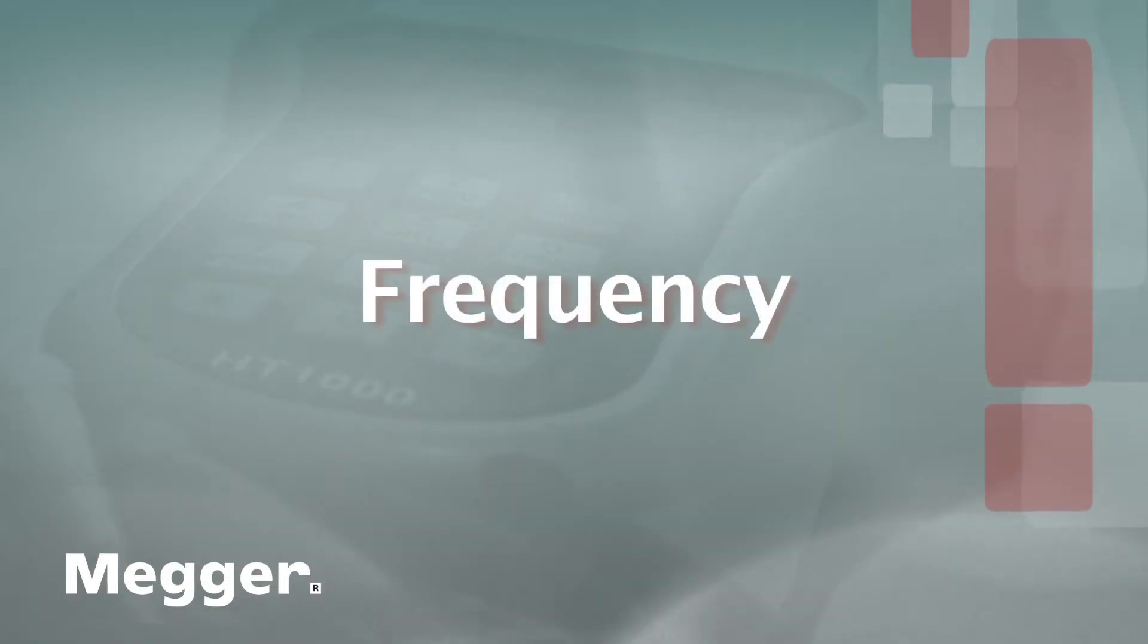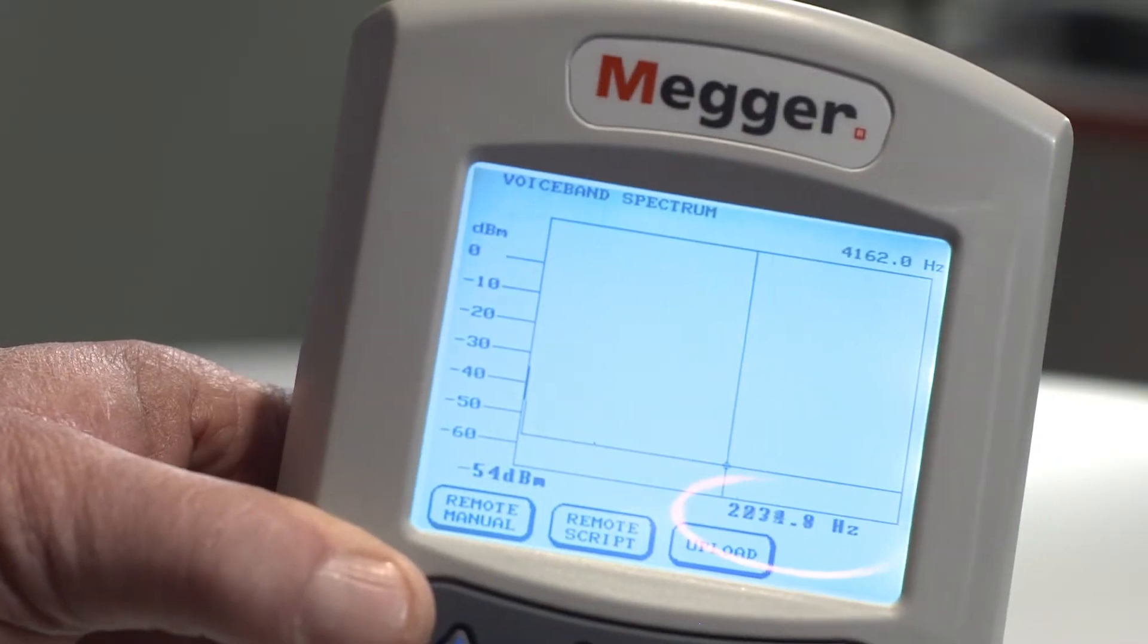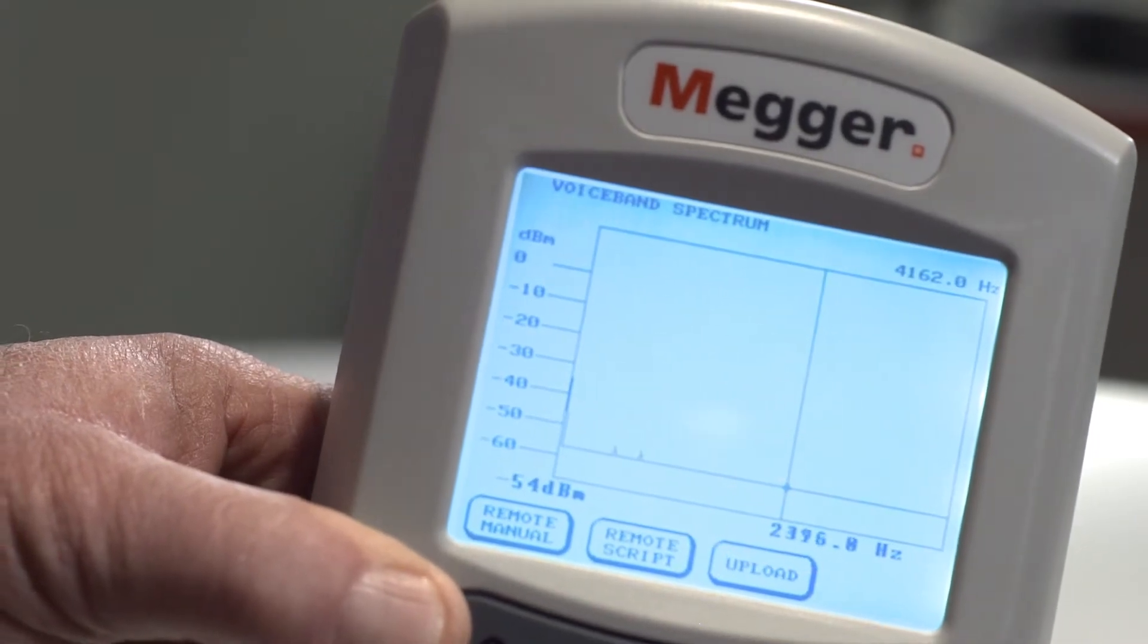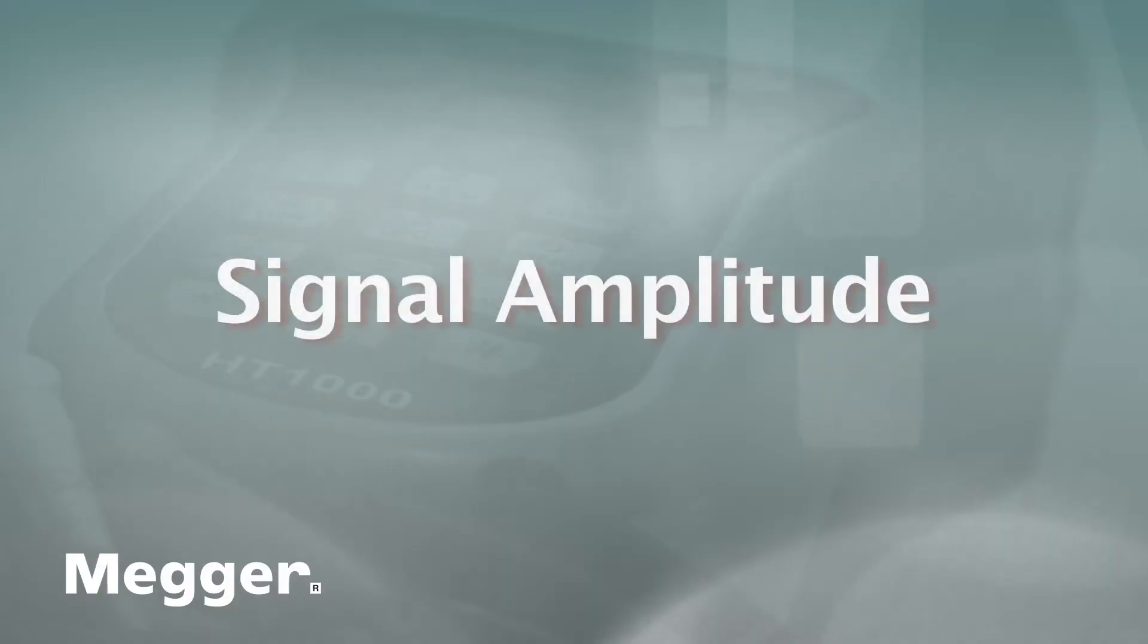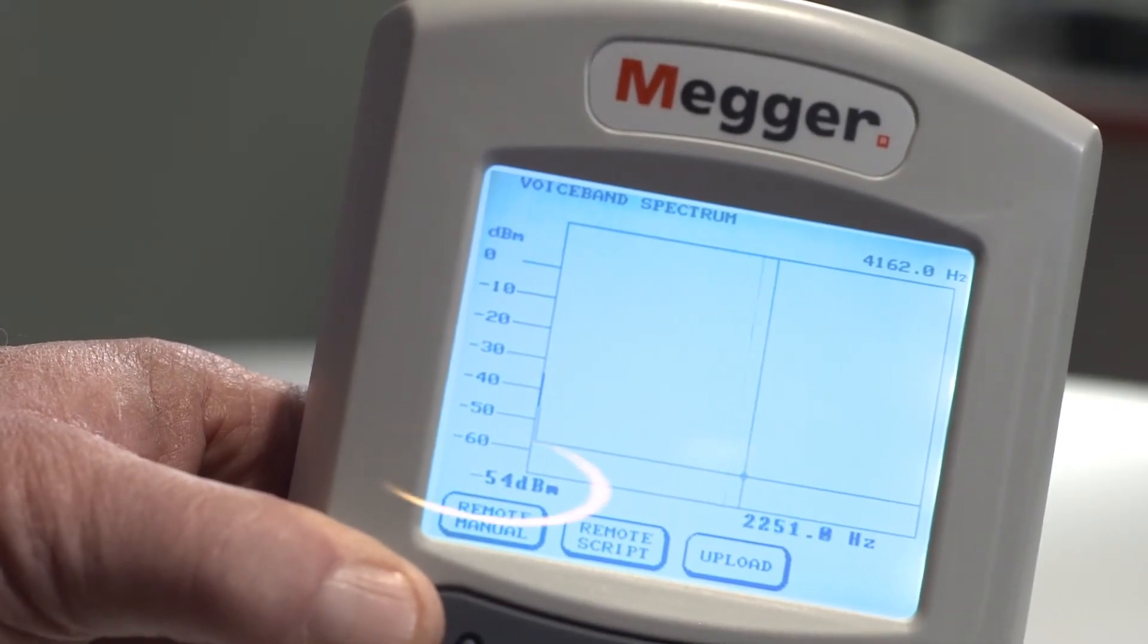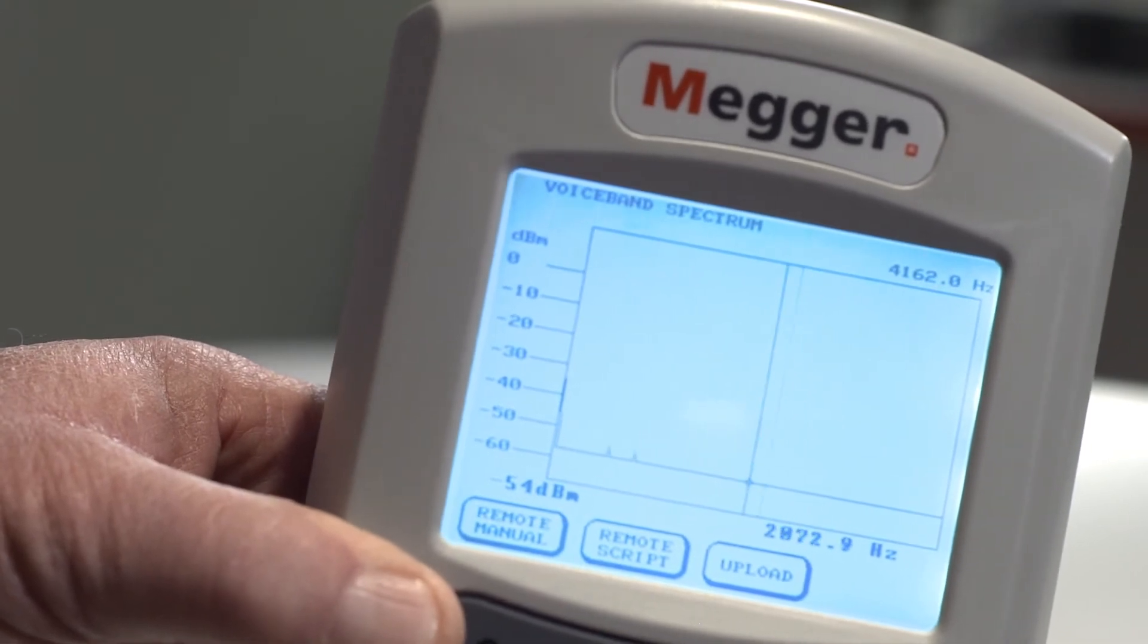Frequency: As the cursor is moved, the frequency of the signal being measured will display. Signal Amplitude: As the cursor is moved, the signal amplitude of a specific frequency will display.